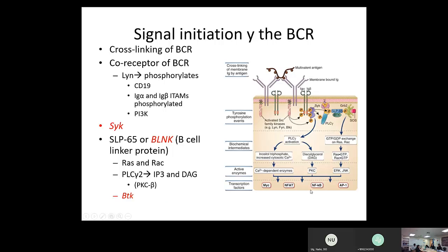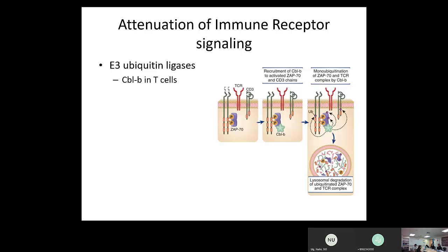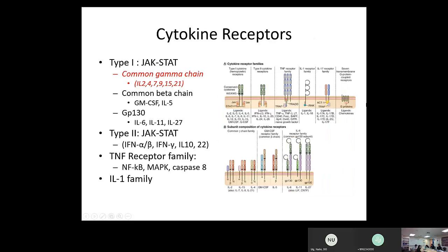There is attenuation of immune receptor signaling through inhibitory receptors that have ITIMs instead of ITAMs on their cytoplasmic tails. Once activated, activating molecules like ZAP70 must be ubiquitinated — tagged for degradation. A molecule called CBLB tags ZAP70, which is then taken to the lysosome and degraded.